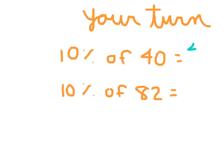All right, for that first problem, remember that is 40 divided by 10. Move that decimal place one place over to the left. 40 divided by 10 is 4 then. 10% of 82, much the same way. 82 divided by 10. One decimal place. 8.2.